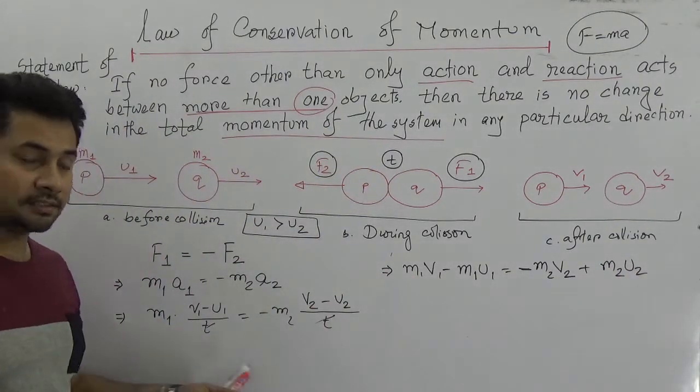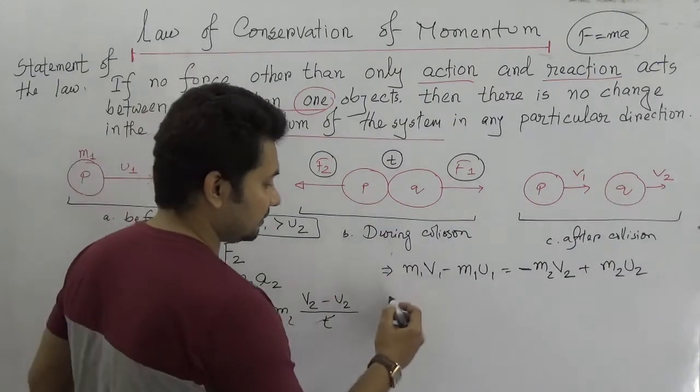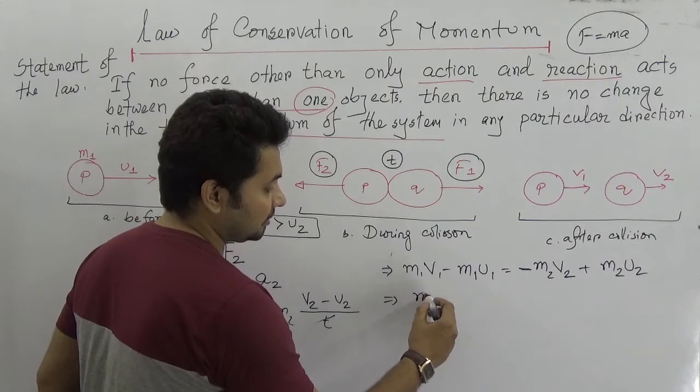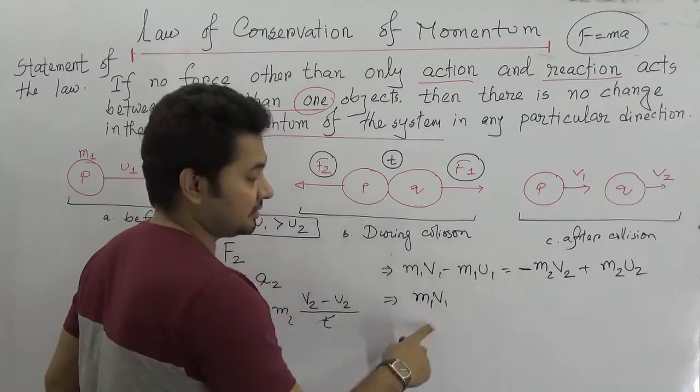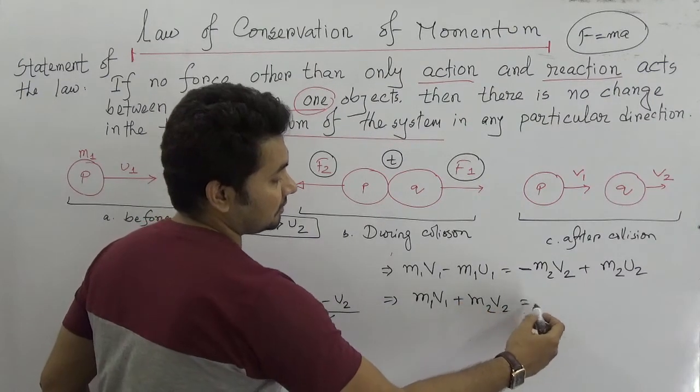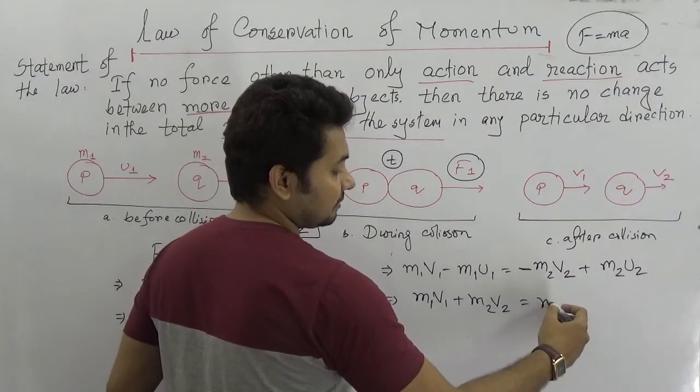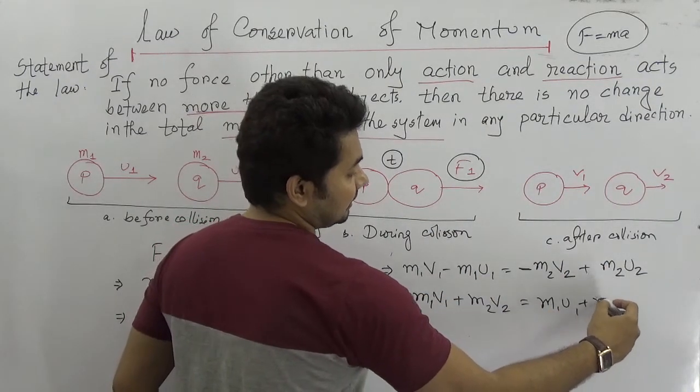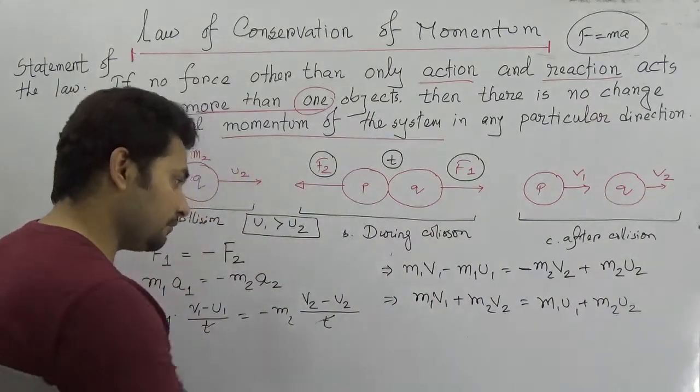We can interchange the two quantities from here. Keep M1V1 here and move M1U1 from here to here. So M1V1 plus M2V2 is equal to M1U1 plus M2U2.